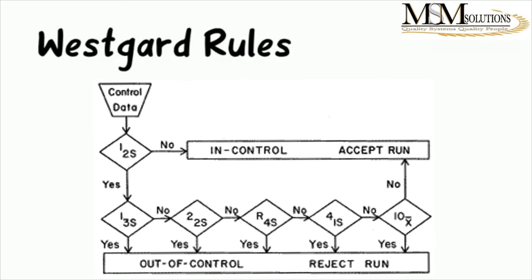If it's not an R-4S violation, you move to the next rule and look at four numbers — this current number relative to the three before it. Do all four lie within the same 1S region? If there are four consecutive numbers all sitting within the same standard deviation limits, that's also an issue — a 4-1S rule violation — and you reject that run.